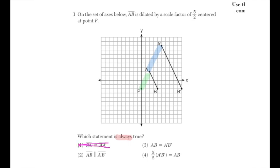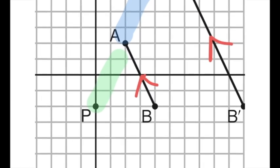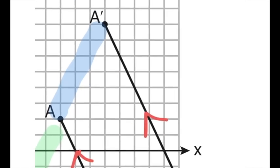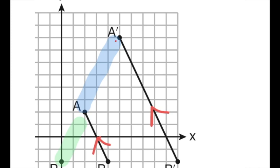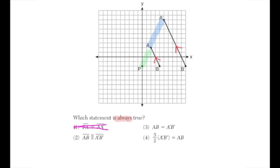Option two says segment AB is parallel to A prime B prime, and it sure does look like that. A line segment when dilated from a point is always parallel to its image. Looking more closely, segment AB has a slope of negative two — down two over one — and A prime B prime similarly has a slope of negative two. They share the same slope, so they're definitely parallel.